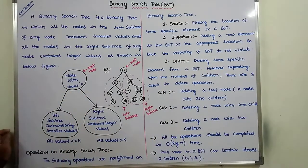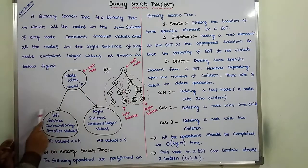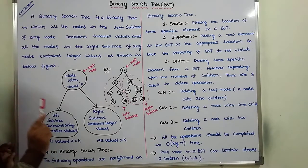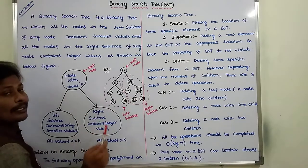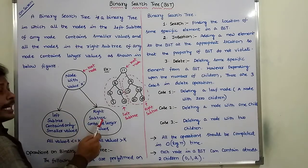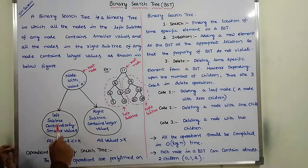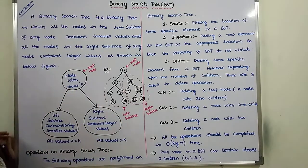Now consider this node with value K. This node can be treated as a root node. This is the left subtree for this node and this is the right subtree. Left subtree can contain only smaller values when compared to the root node value. Right subtree can contain larger values when compared to the root node value.